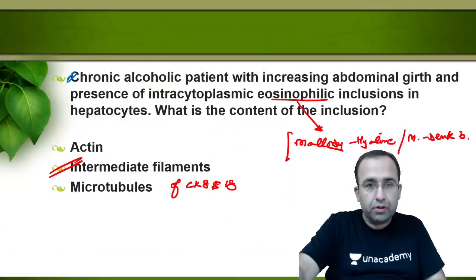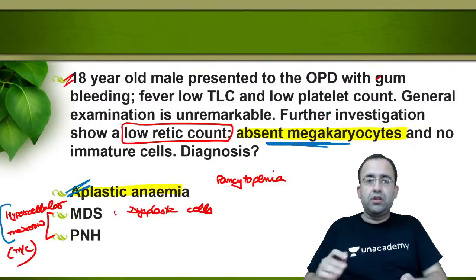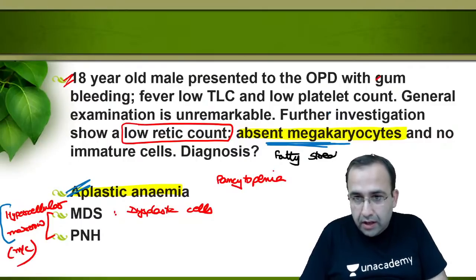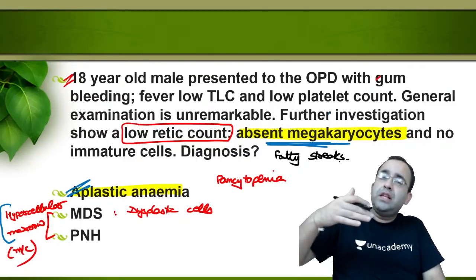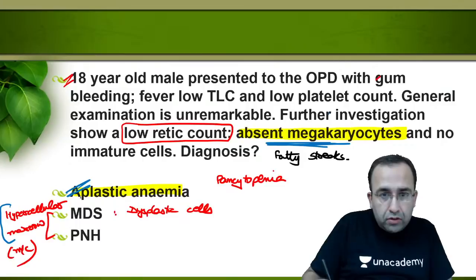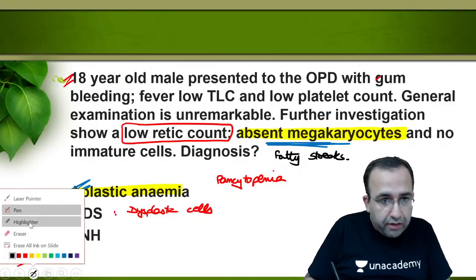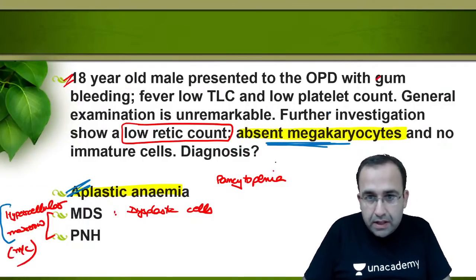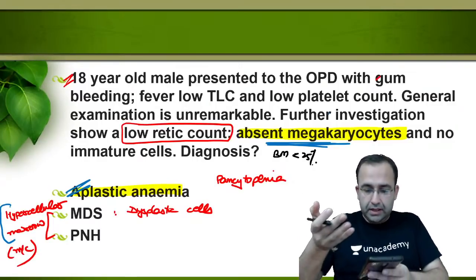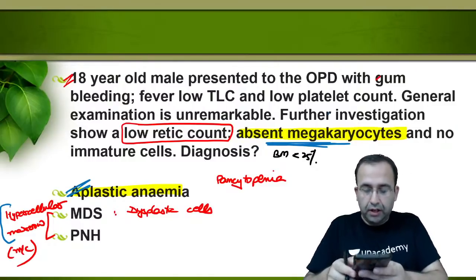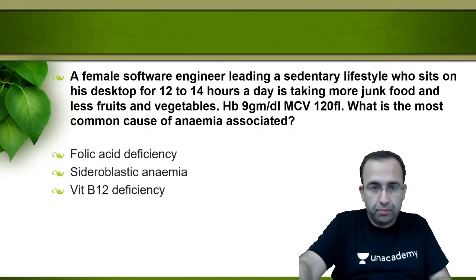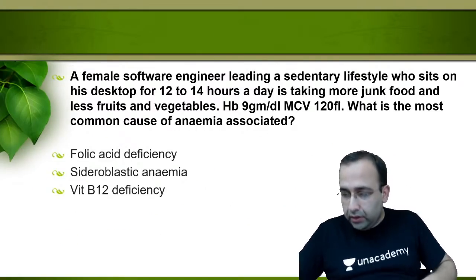Clarification on aplastic anemia: fatty streaks in bone marrow further prove the diagnosis of aplastic anemia. Aplastic anemia has bone marrow cellularity of less than 25%, so all remaining cells are fat. Also note: TLC and platelet count were not normal in that case — both were low.